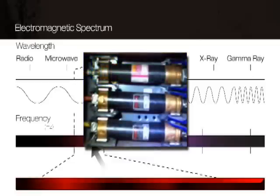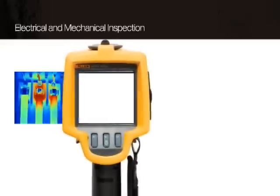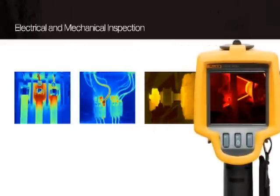For example, let's say you're performing an electrical or mechanical inspection. Using the thermal imager, you can take infrared pictures of fuses, connections, couplings, and misaligned belts.